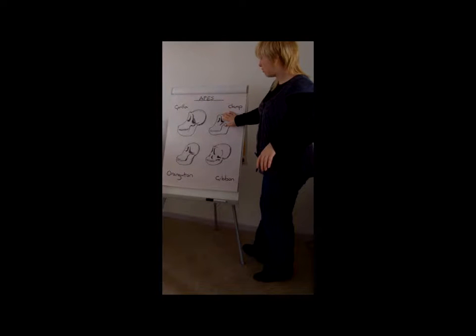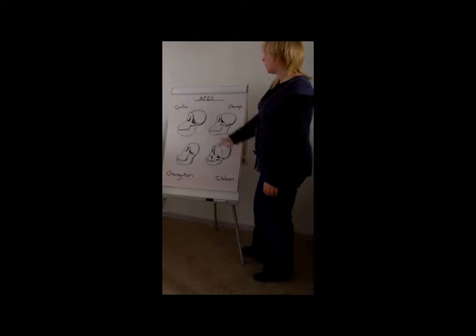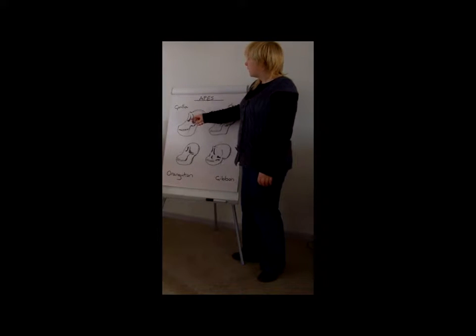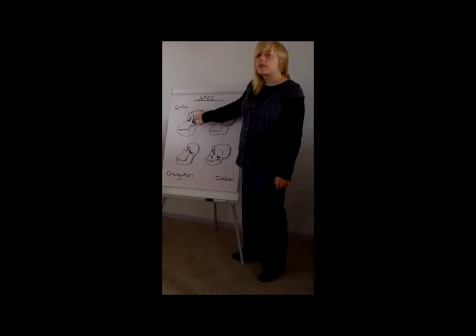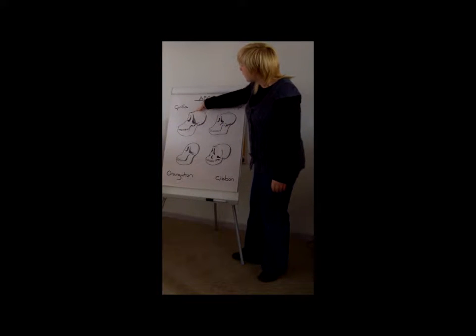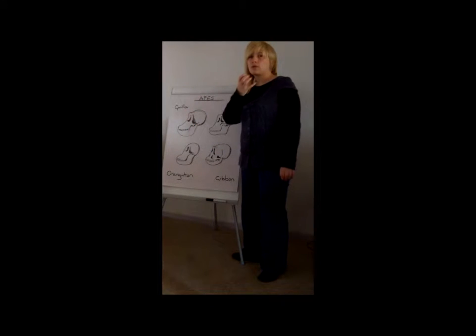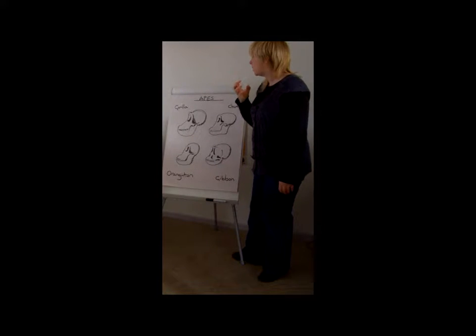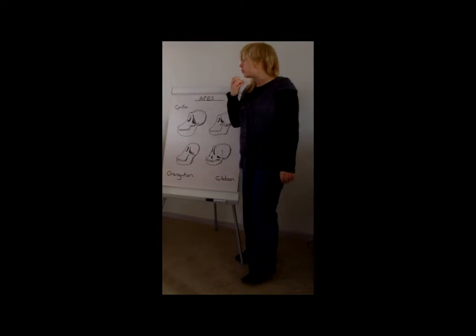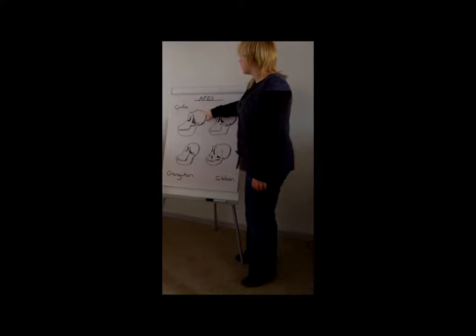If we look here at four examples of skulls of apes, you can see here the gorilla skull. This is the most robust and the thickest of all the skulls. You can see here the sagittal crest, and this is for attachment of the muscles from the jaw. The jaw muscles are so big because the jaw is so big, they need something extra to attach to, and they use a sagittal crest for that.